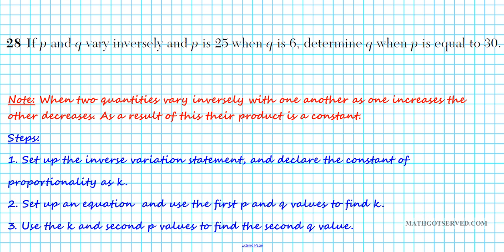Alright, let's take a look at problem 28. It reads, if P and Q vary inversely, and P is 25 when Q is 6, determine Q when P is equal to 30.